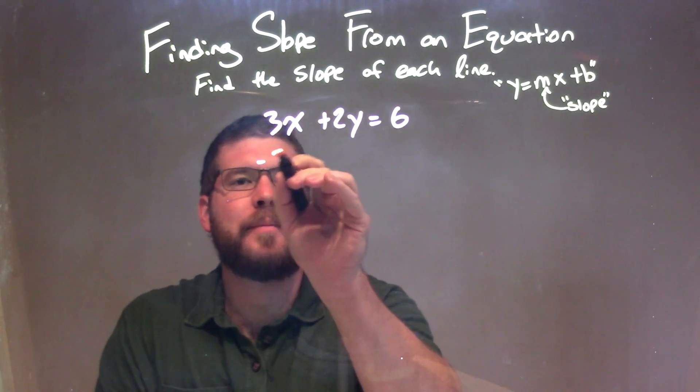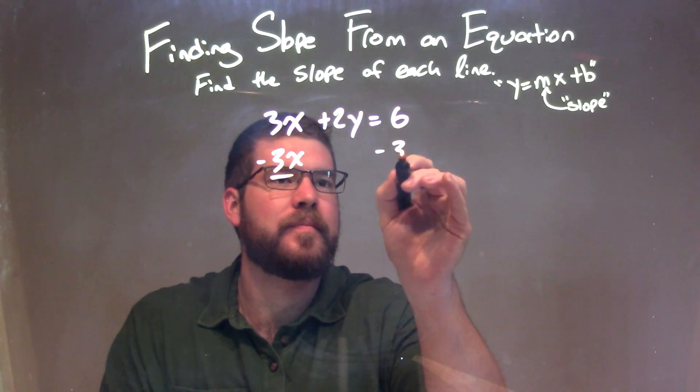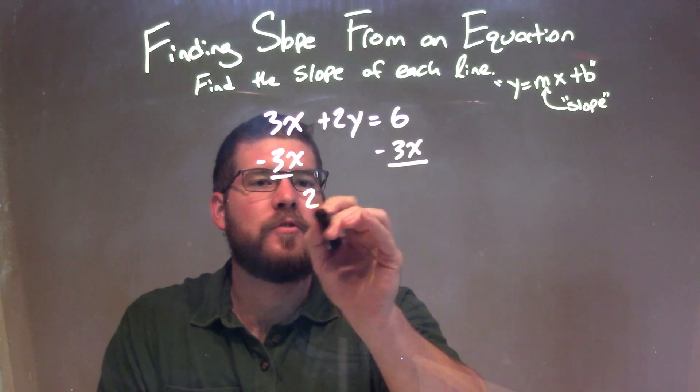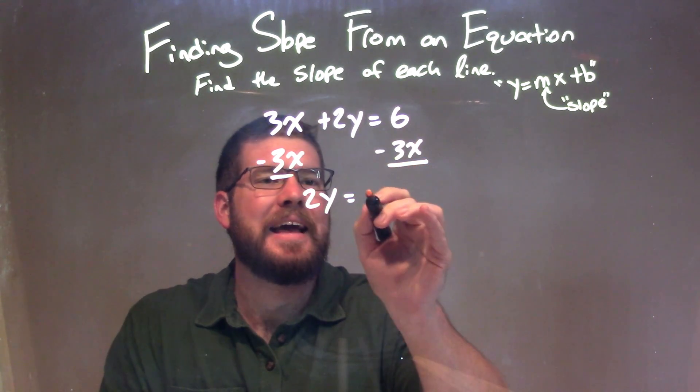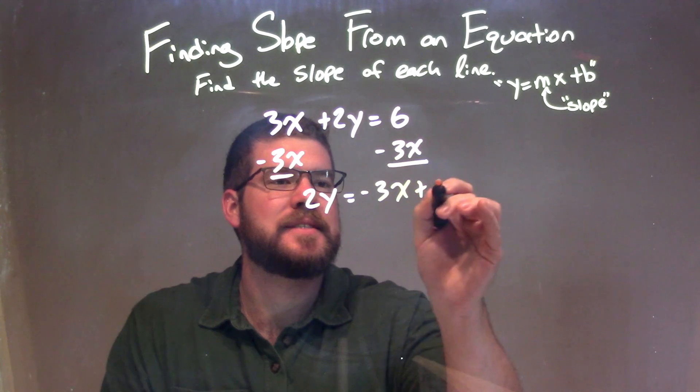To do that, I need to subtract 3x from both sides, giving 2y on the left is equal to negative 3x plus 6 on the right.